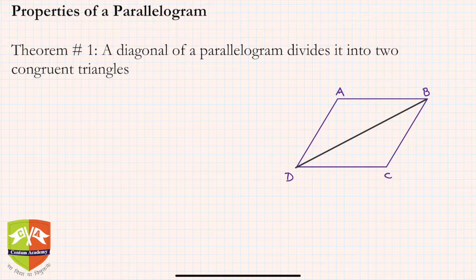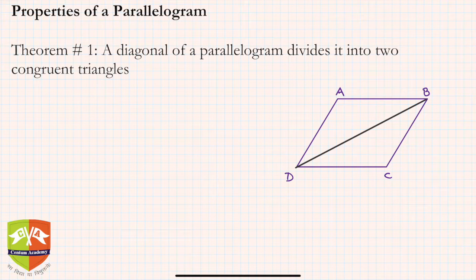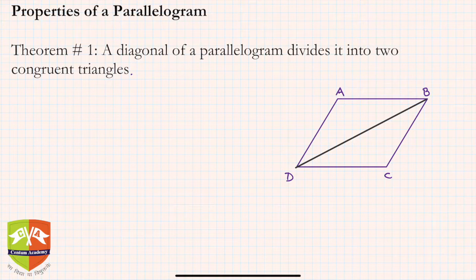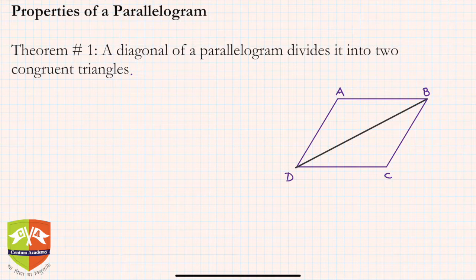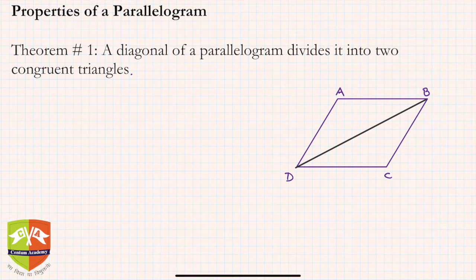Let's begin. In this session we are going to discuss Theorem 1, which says: a diagonal of a parallelogram divides it into two congruent triangles. We will also be revising the properties of parallelograms — restating all those properties and then seeing how best we can use them. A line segment joining the opposite vertices of a quadrilateral is called a diagonal.